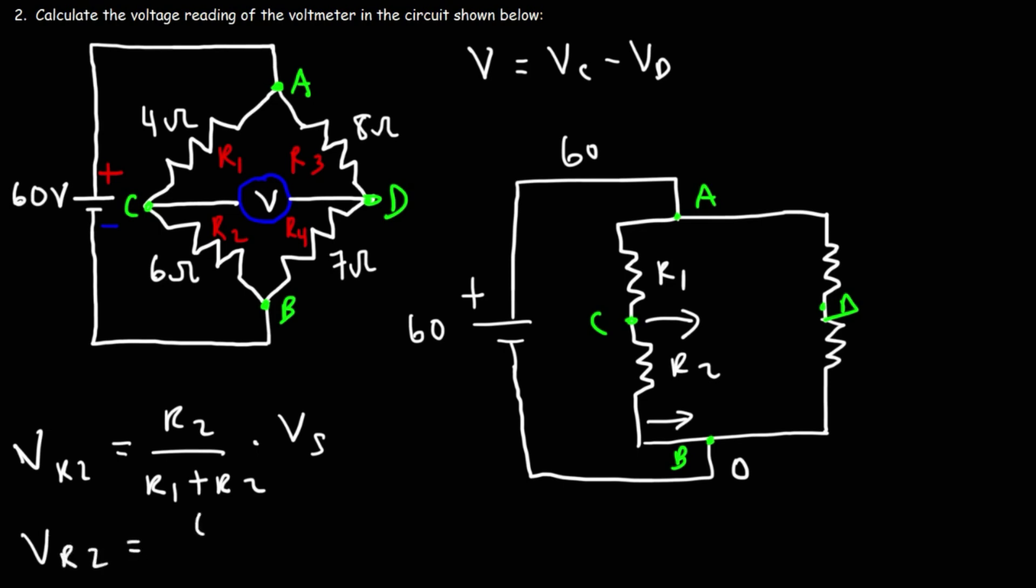R2 is 6, R1 is 4, and then plus R2 times the source voltage. So we have 6 over 10 times 60. 60 divided by 10 is 6, and then 6 times 6 is 36. So the voltage across R2 is 36, which means the potential at C is 36 volts.